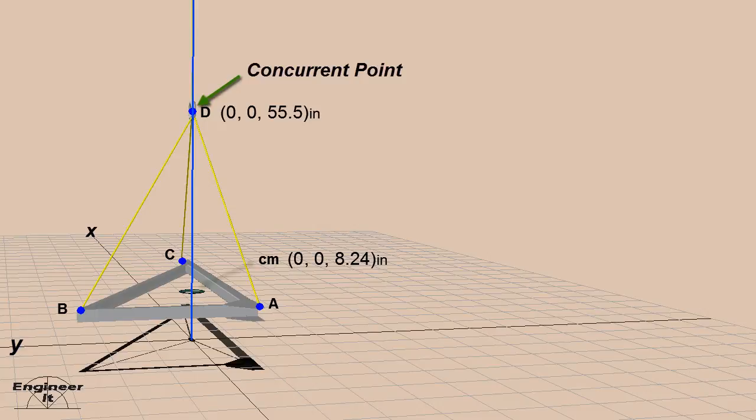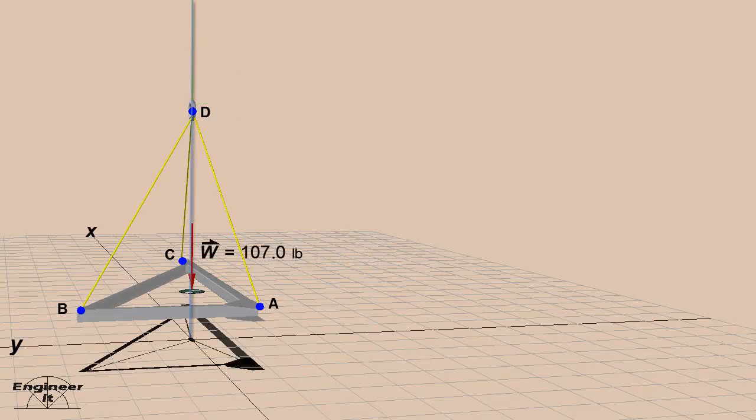The concurrent point at D is directly above the center of mass and the origin. The vector W representing the weight of the steel frame is at the center of mass with its vertical line of action.